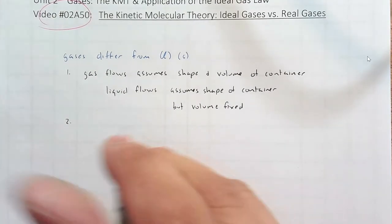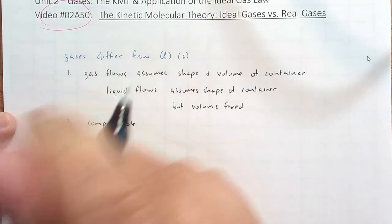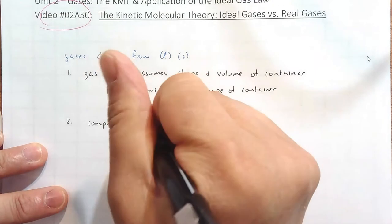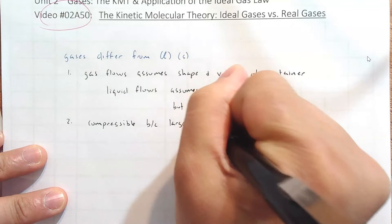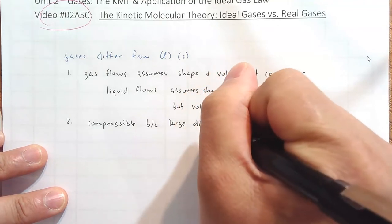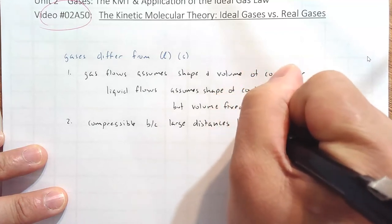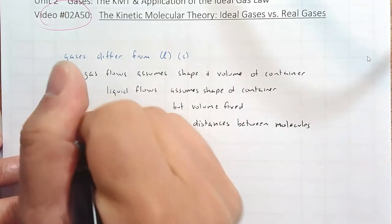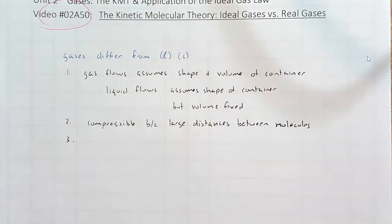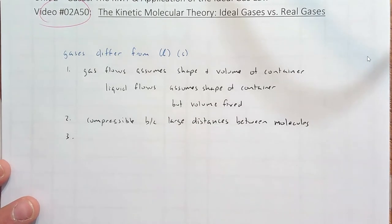Number two, gases are compressible because there are large distances between molecules. That is not so for liquids and solids. And yes, liquids and solids are not compressible relative to gases, but let's just say they're not compressible.